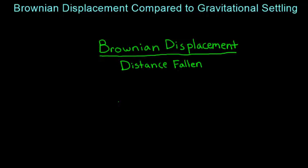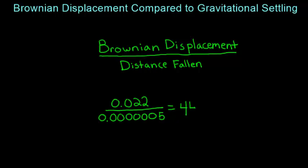For example, for 0.001 micrometer particles, the Brownian displacement in one minute is 0.022 meters, and the distance fallen in one minute is 0.0000050 meters. Therefore, the Brownian motion to gravitational settling ratio is equal to 44,000.